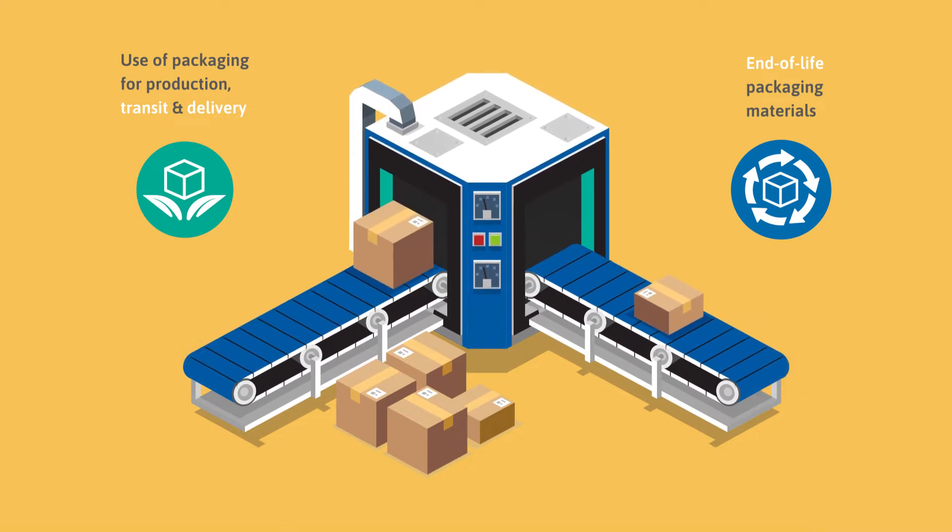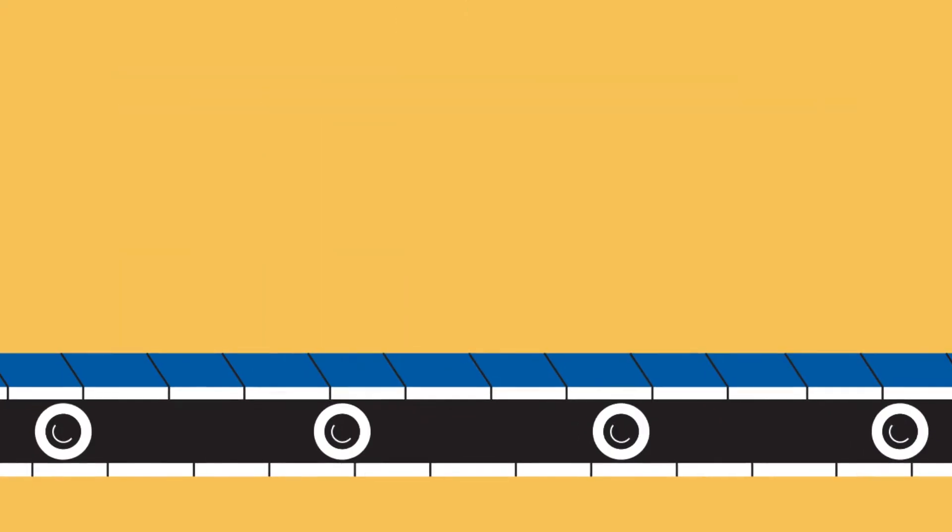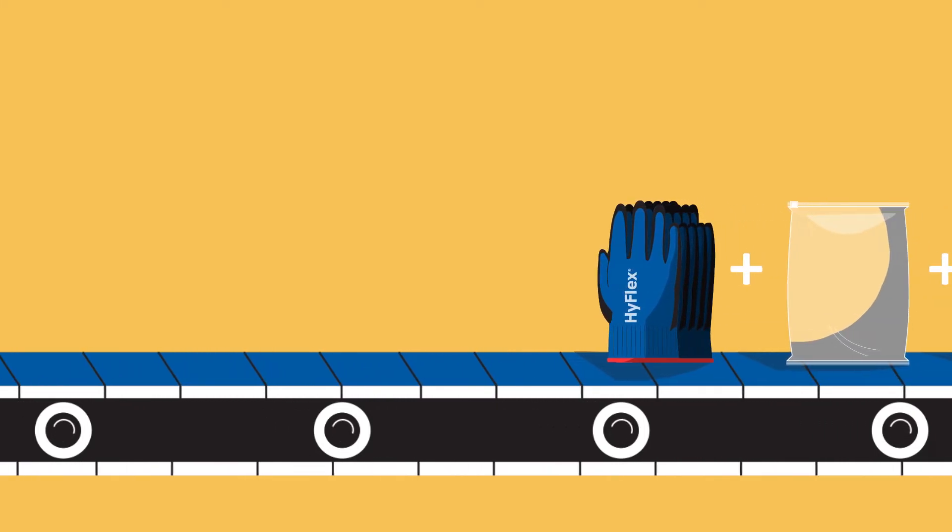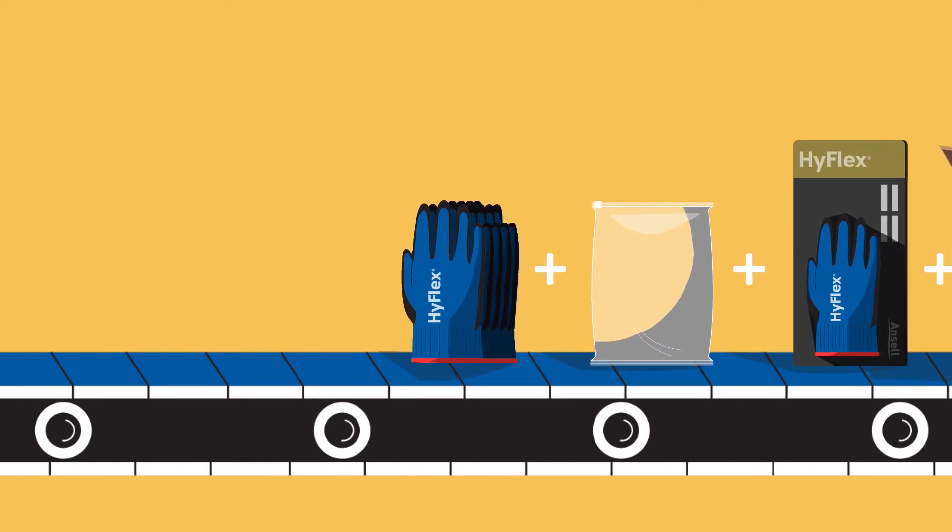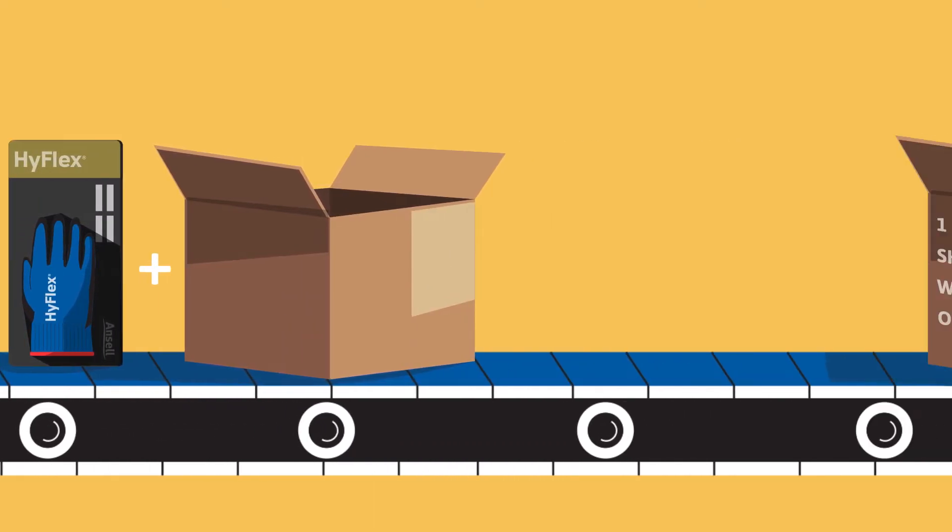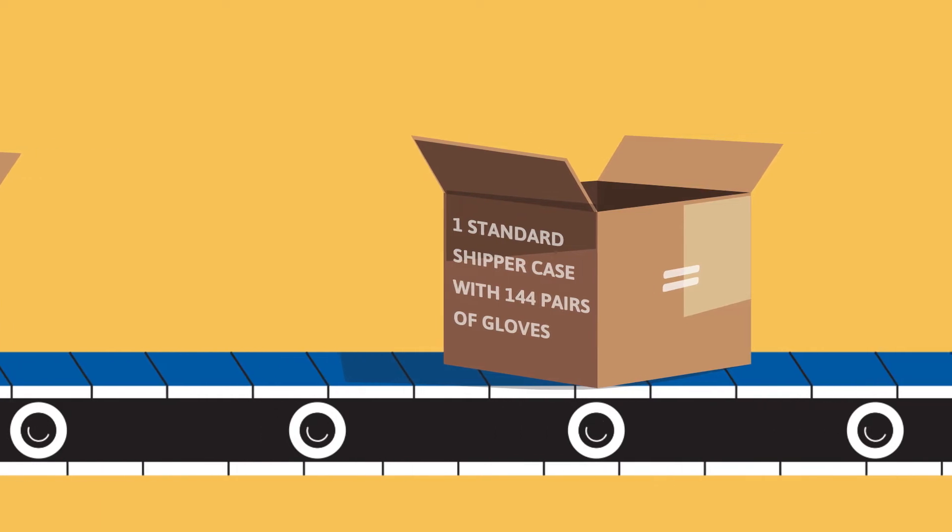Our HyFlex mechanical gloves are traditionally packaged in a plastic bag together with paper inserts and product information. They are then transported to our customers in regular cardboard chipper cases. A standard chipper case holds 144 pairs of HyFlex mechanical gloves.